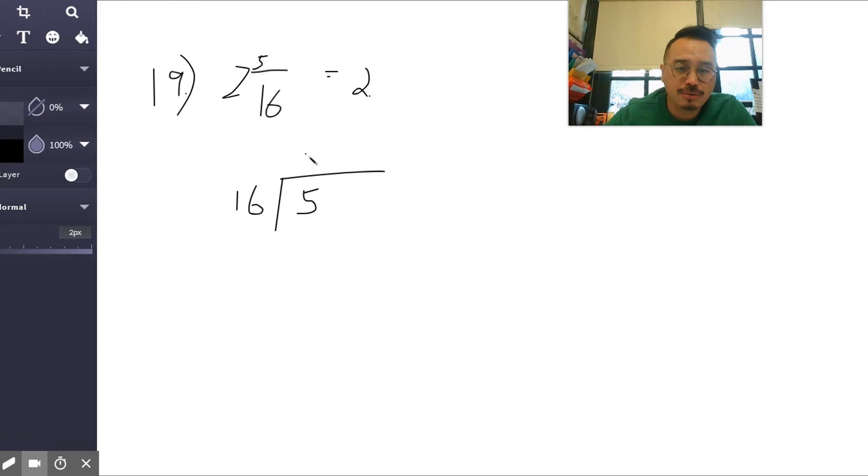Now 16 is not going into five, so that goes in zero times. You subtract, add a decimal, add a zero, bring the zero down, and you just keep going. 16 into 5, 3 times. Three times 16 is 48, subtract, bring down a zero. And then 16 into 21.